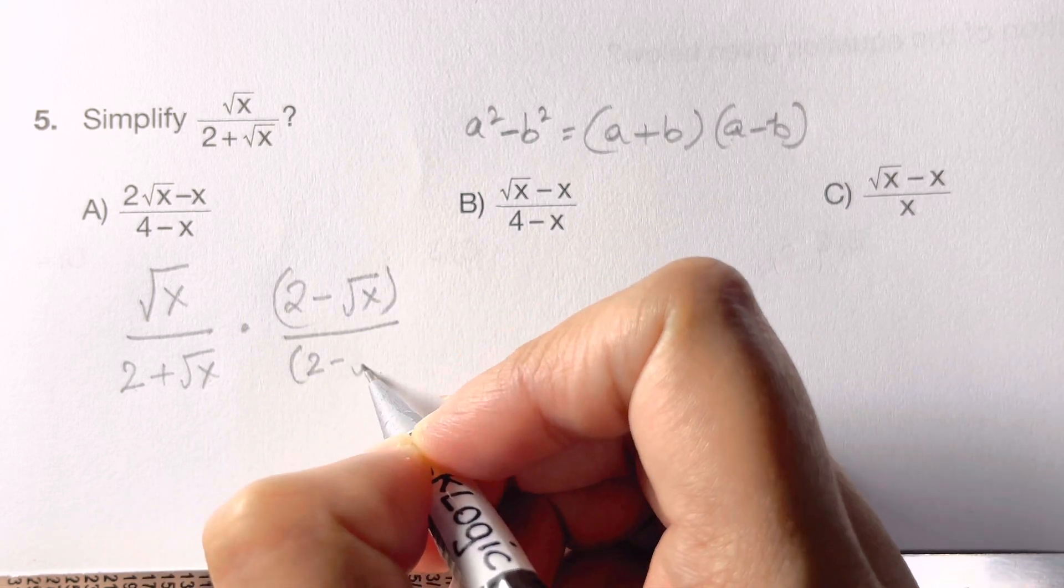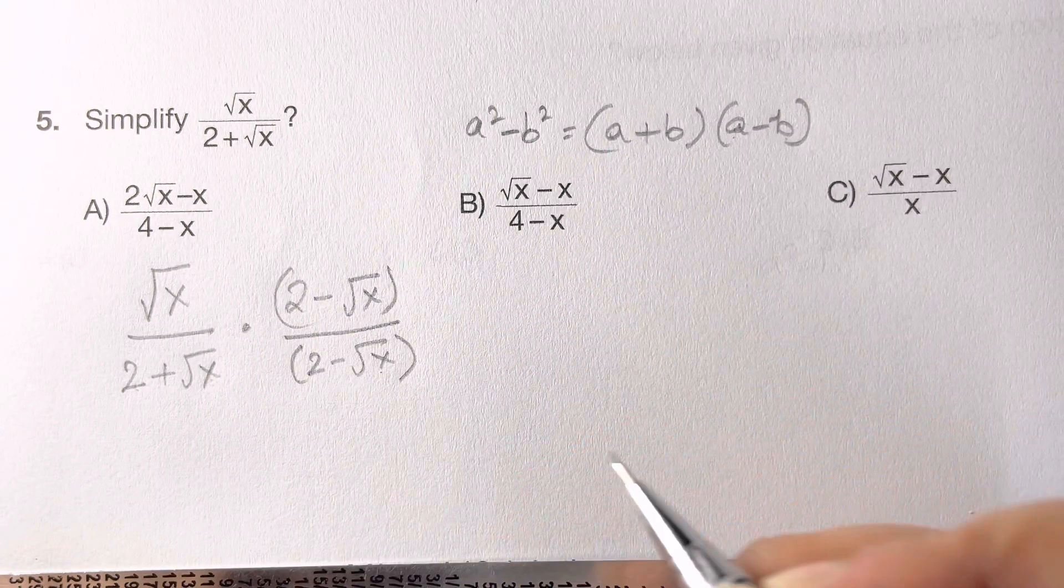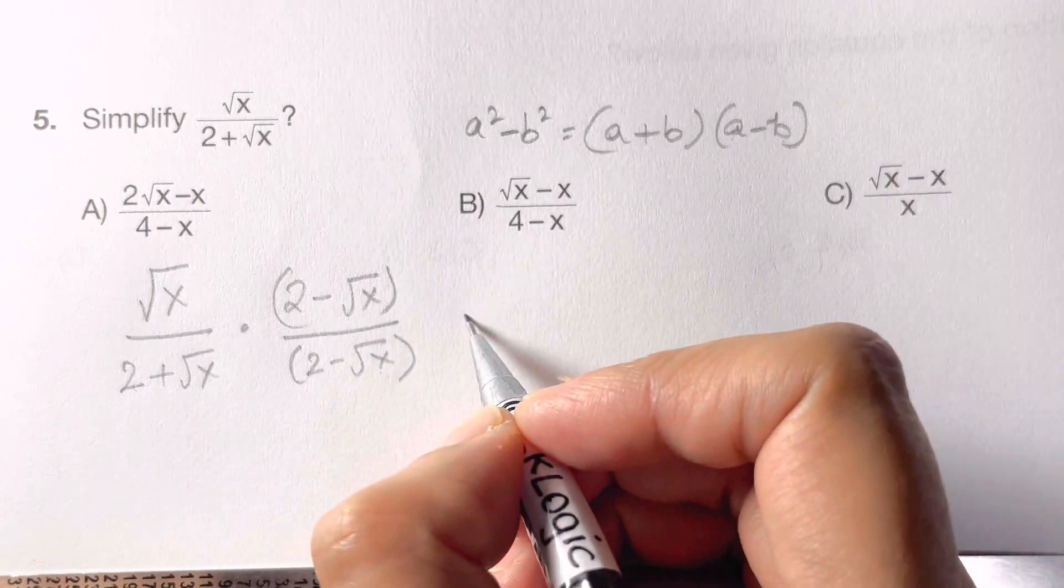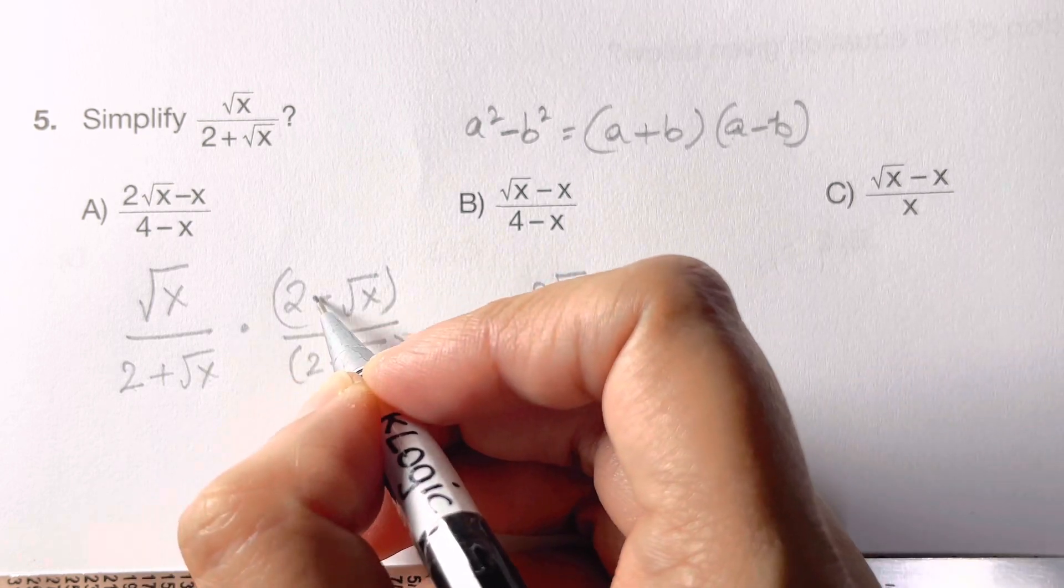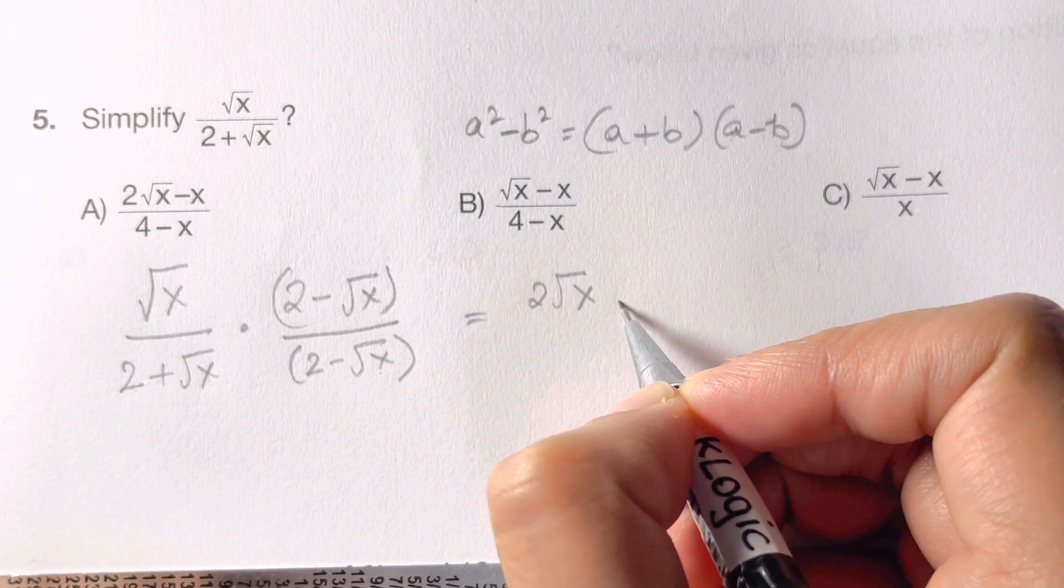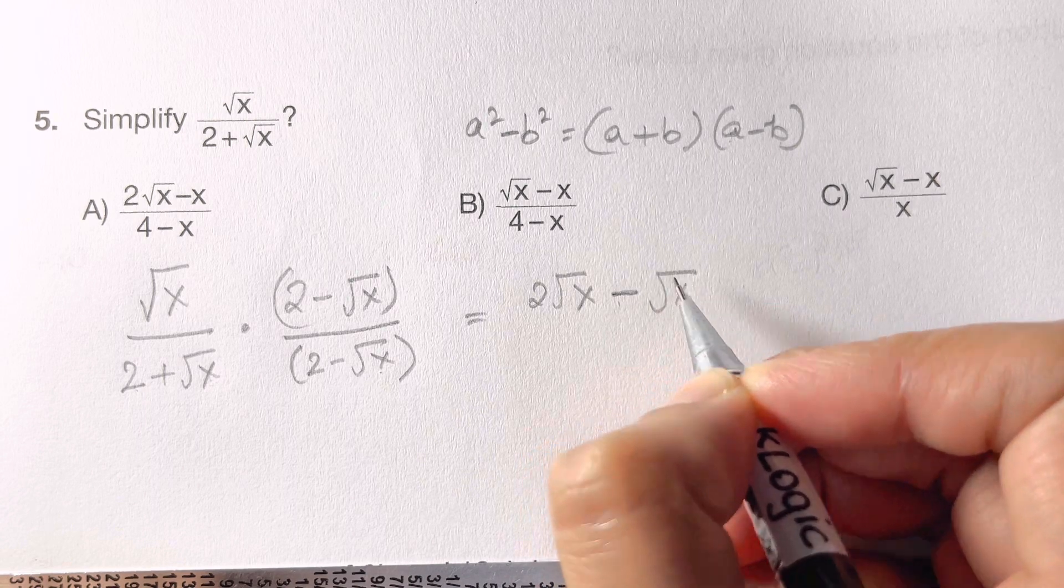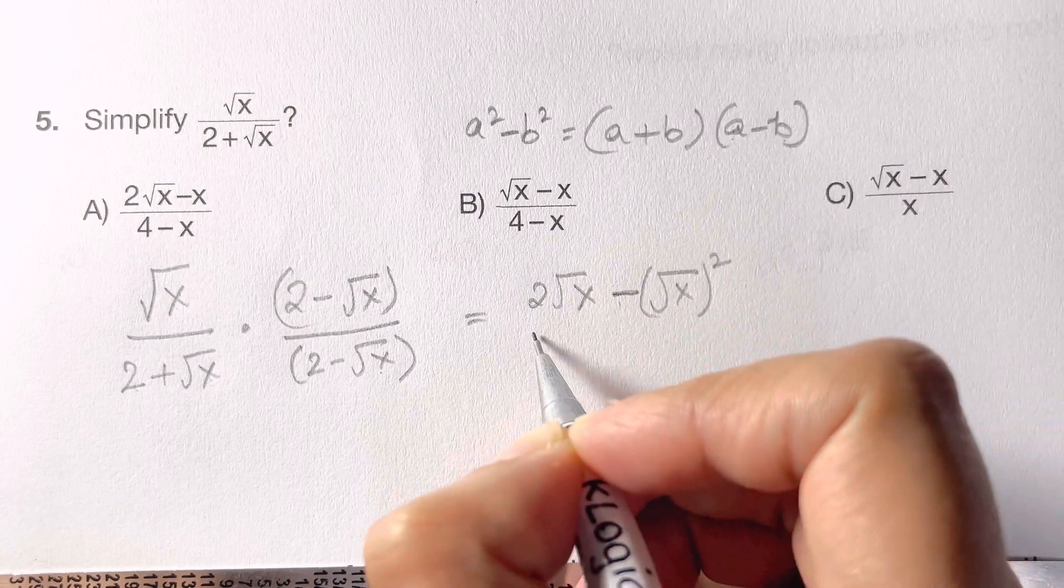Now just multiply, that's it. Root x times 2 is 2 root x, minus root x into root x, minus root x the whole squared, divided by...